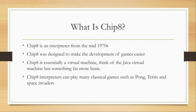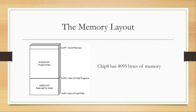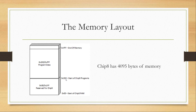Chip 8 makes a great emulation project because it is simple to integrate. The memory layout of the Chip 8 has 4095 bytes of memory. You can see that the start of the Chip 8 RAM is at address 0x00, and the bytes between addresses 0x00 and 0x1FF are reserved for the Chip 8. Inside this memory region we store things such as character sets. Chip 8 programs start at address 0x200, and the program data and the program itself consume the rest of memory.